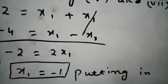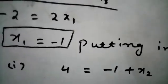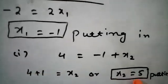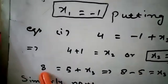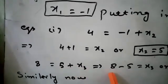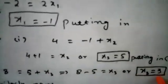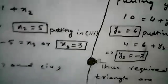Dividing both sides by 2 gives x1 = −1. Putting x1 = −1 into equation 1: 4 = −1 + x2, so x2 = 5. Putting x2 = 5 into equation 3: 8 = 5 + x3, so x3 = 3. We now have x1 = −1, x2 = 5, x3 = 3. Similarly, we will use the same method to solve for the y-coordinates.